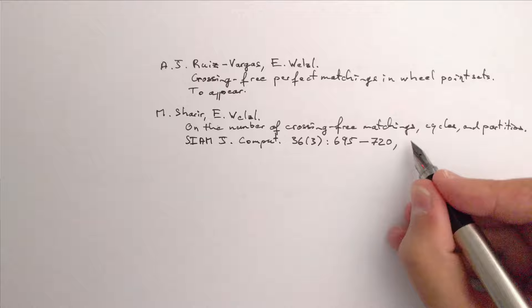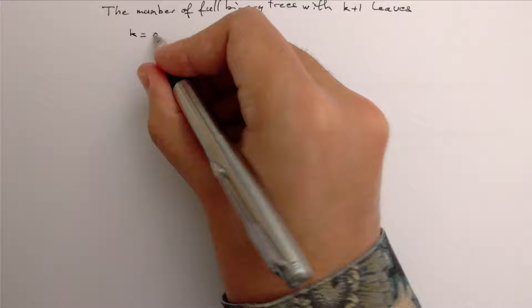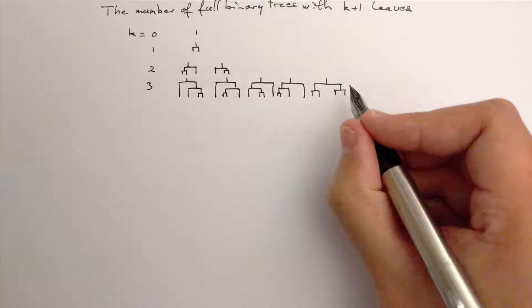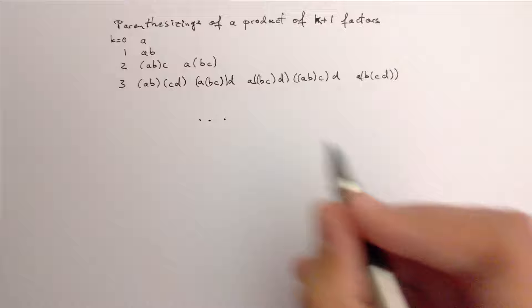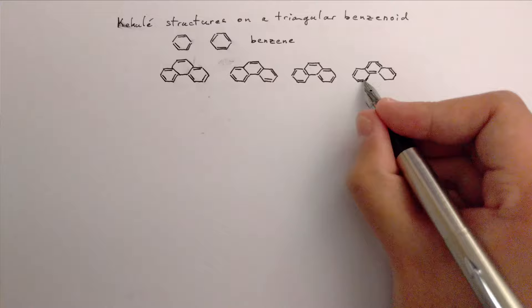Instead, I'd like to list some more things that are counted by Catalan numbers. The Catalan number C_k is the number of full binary trees with k plus 1 leaves. It is the number of ways to parenthesis a product of k plus 1 factors.